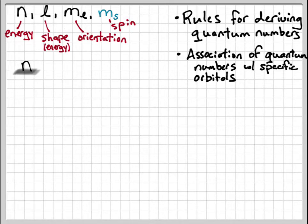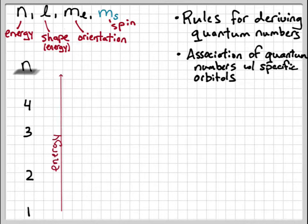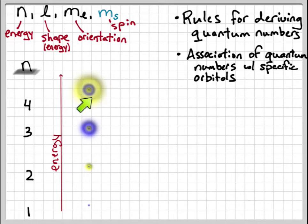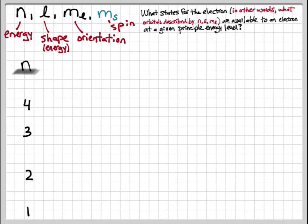Recall that the rules governing the values for the principal quantum number n, which dictates the energy, is that it goes in integer steps: 1, 2, 3, 4, on up, and that the energy is increasing as n increases. In terms of our orbital, this means that the orbital is going to be increasing in size as we go up in energy. At n equals 1, if this orbital represents the 90% probability of finding the electron, when we get to n equals 4, that 90% probability is spread out over a much larger volume around the nucleus.